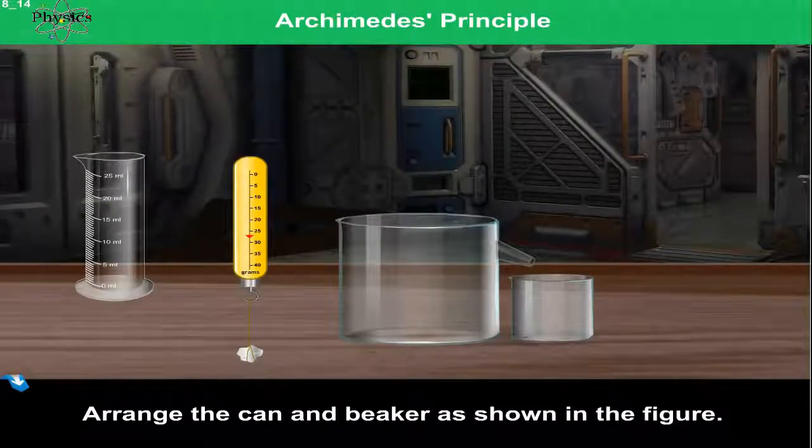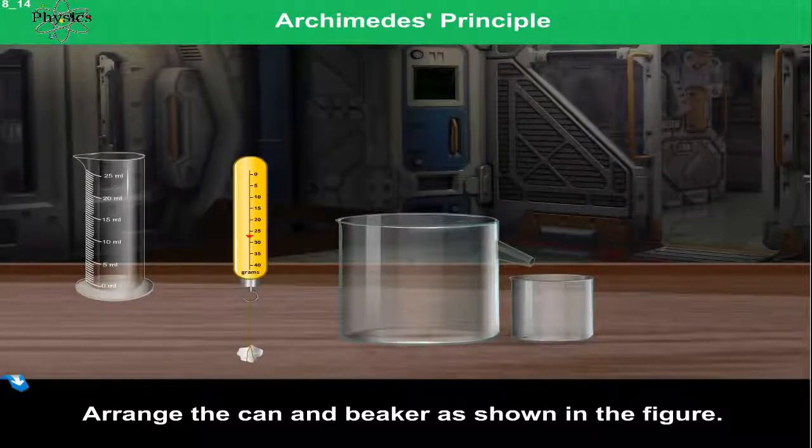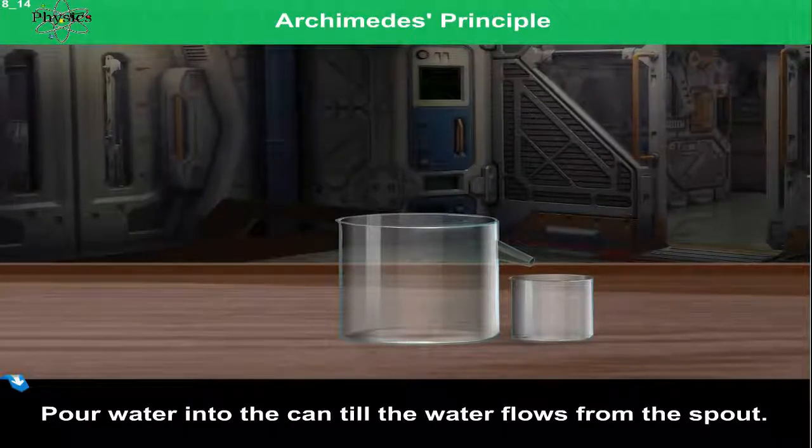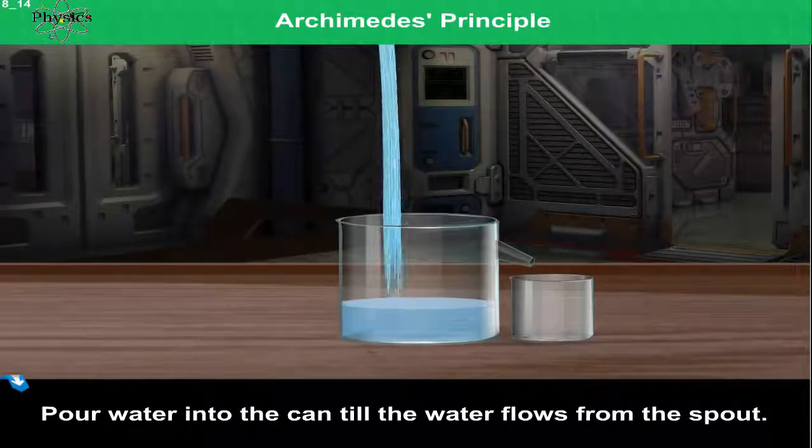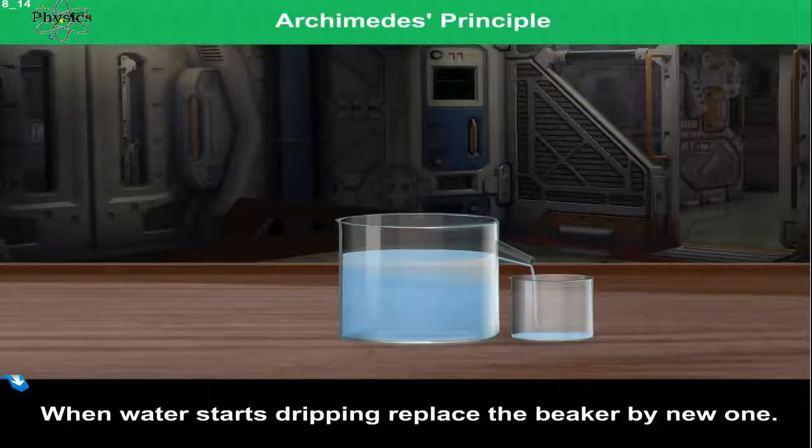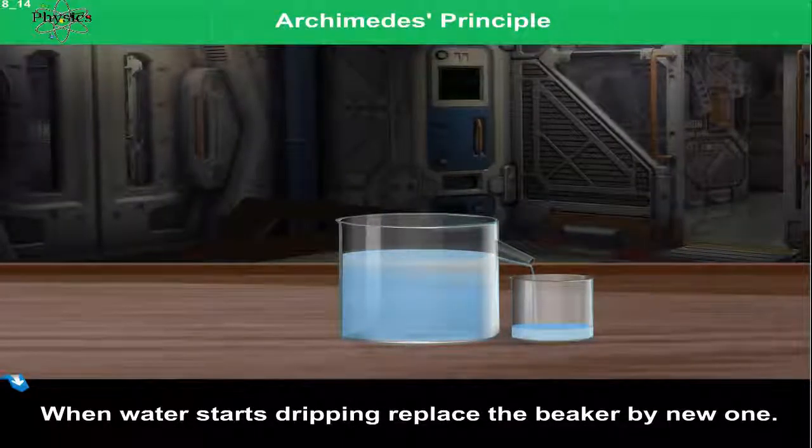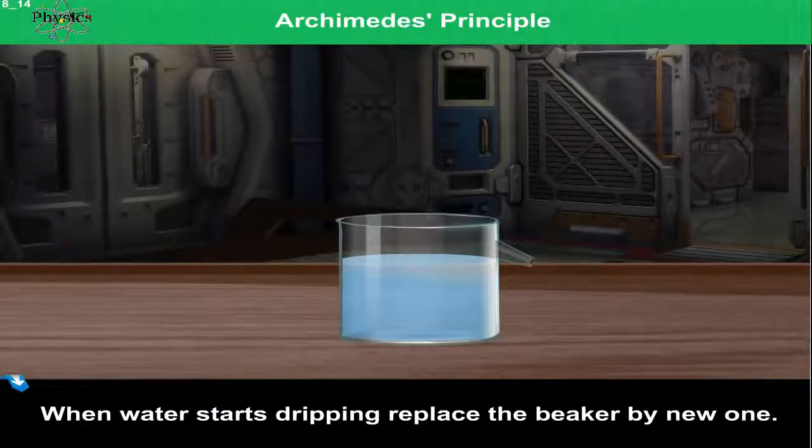Arrange the can and beaker as shown in the figure. Pour water into the can till the water flows from the spout. When water starts dripping, replace the beaker by a new one.